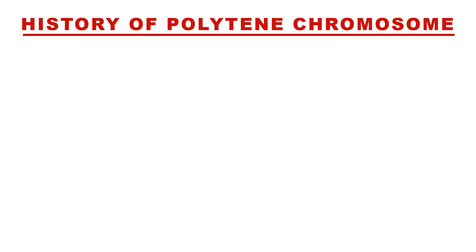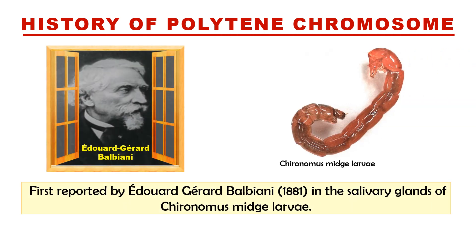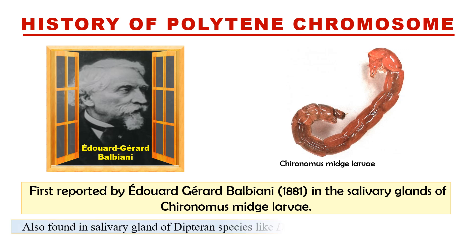Regarding the history of polytene chromosomes, these chromosomes were first reported by Balbiani in 1881 in the salivary gland of the Chironomus larvae. These chromosomes are also found in the salivary glands of dipteran species like Drosophila, Milano, and Gastro larvae. Due to their presence in the salivary glands, they are also called salivary gland chromosomes.